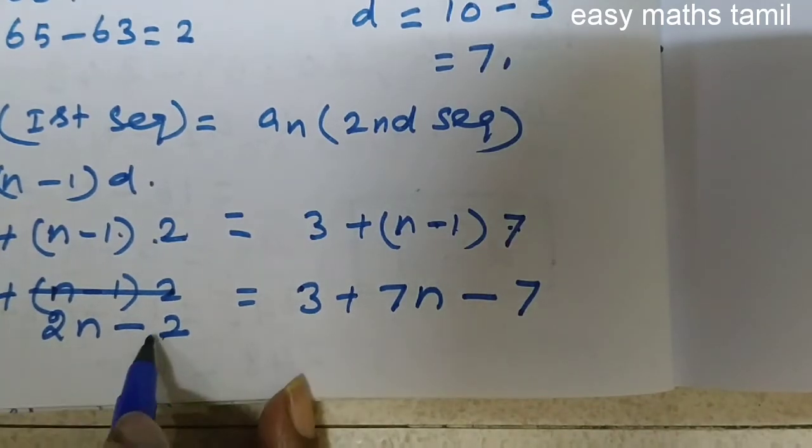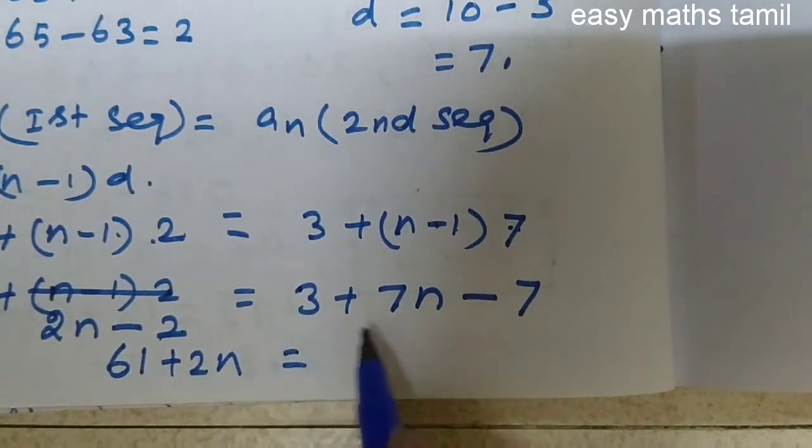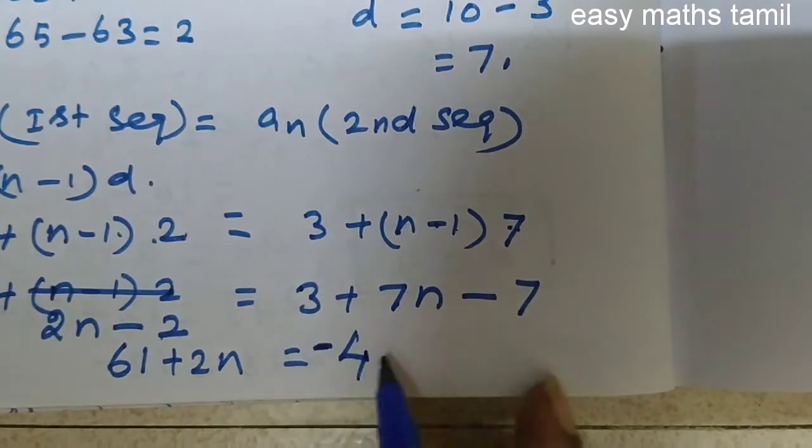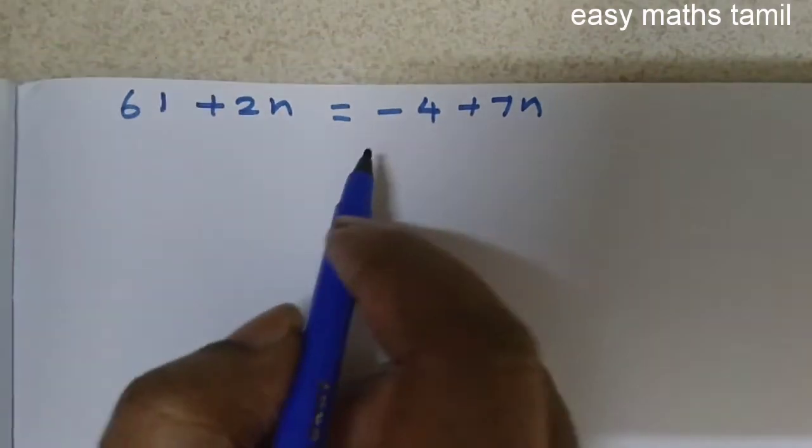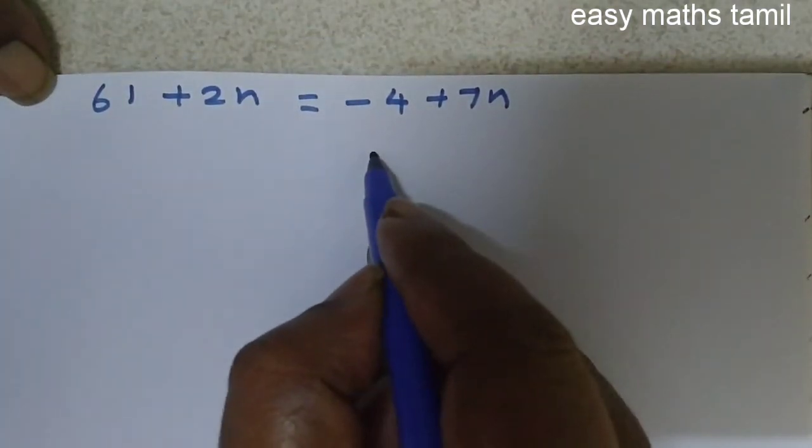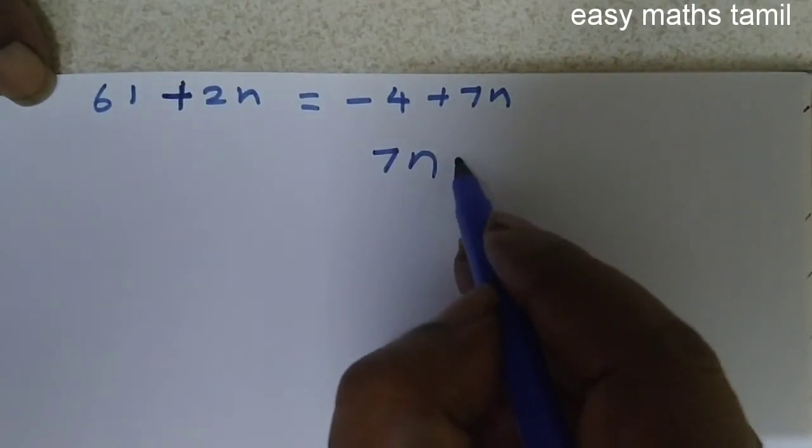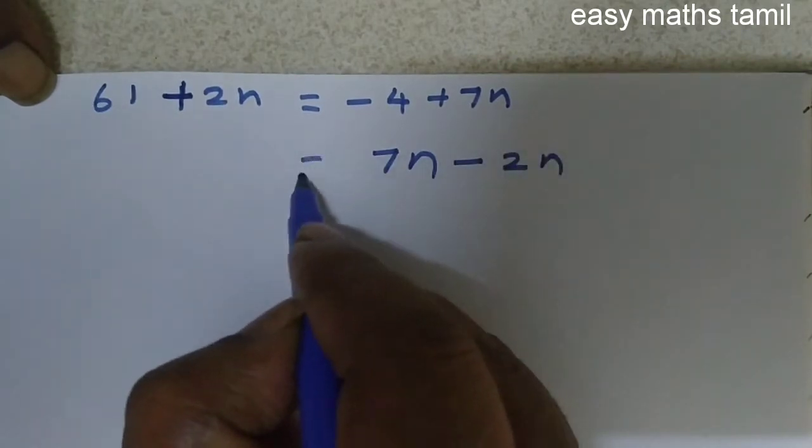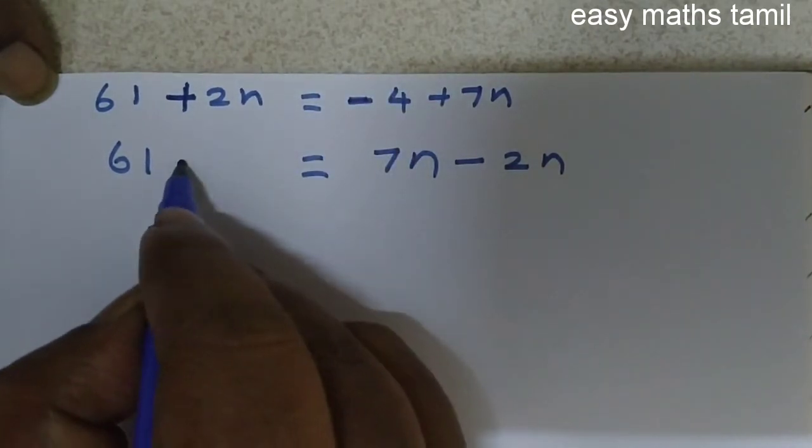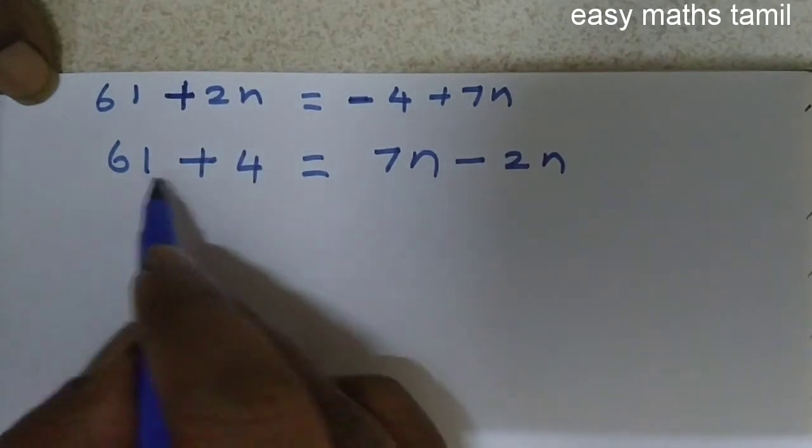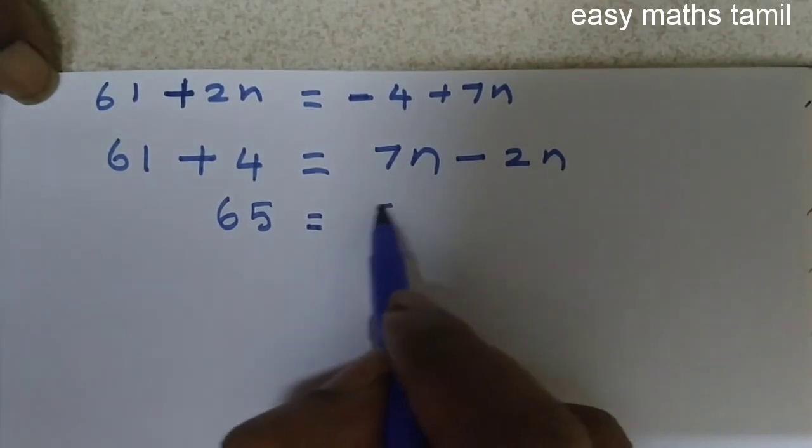63 minus 2 is 61 plus 2n is equal to minus 4 plus 7n. Taking this plus 2n to the right hand side of the equation, this will become minus 2n. Taking this minus 4 to the other side of the equation, then this will become plus 4. 61 plus 4 is 65. 7n minus 2n is 5n.